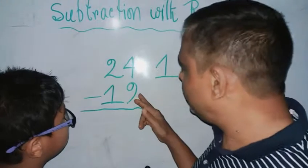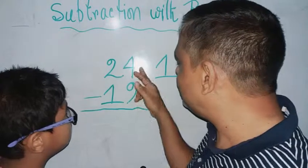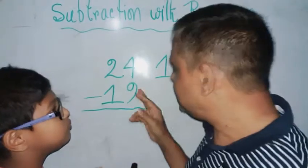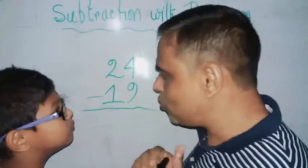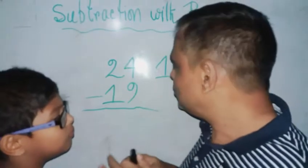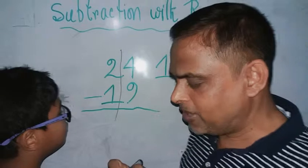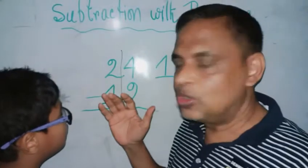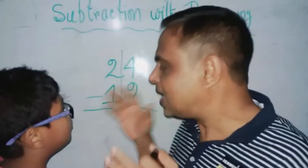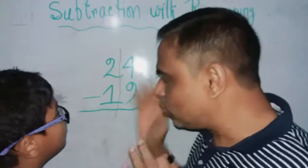So you need to think how to take away 9 from 4. It's a little bit different. Is it possible to take away 9 from 4? No, nowhere. So what do you need to do? You remember in our previous video while we were doing the multi-digit addition, we talked about regrouping. You remember it? Yeah.